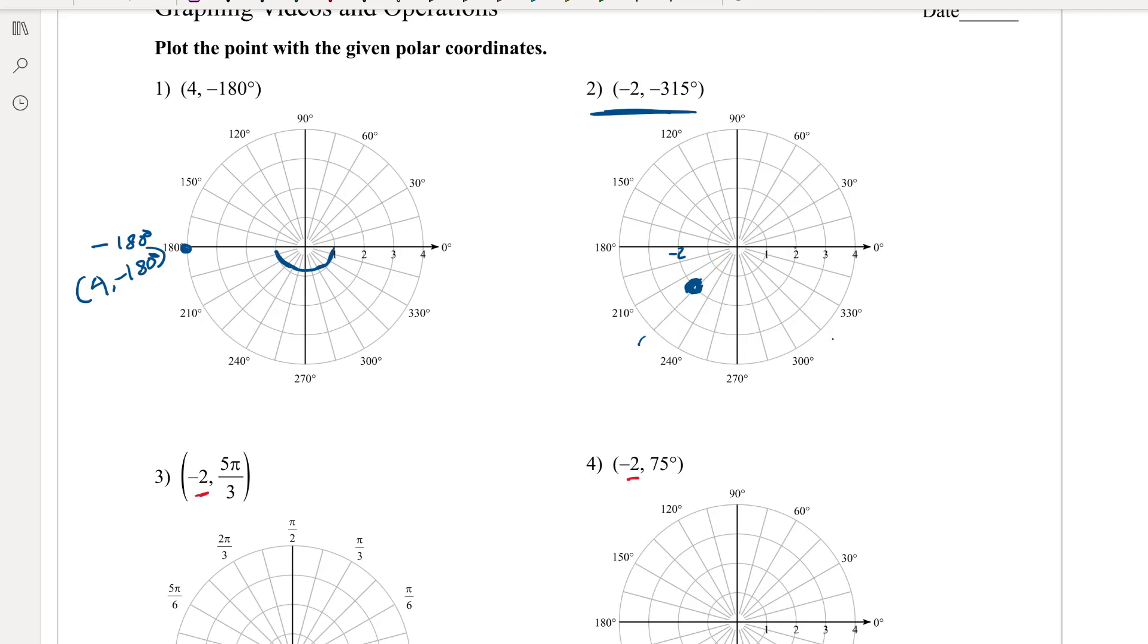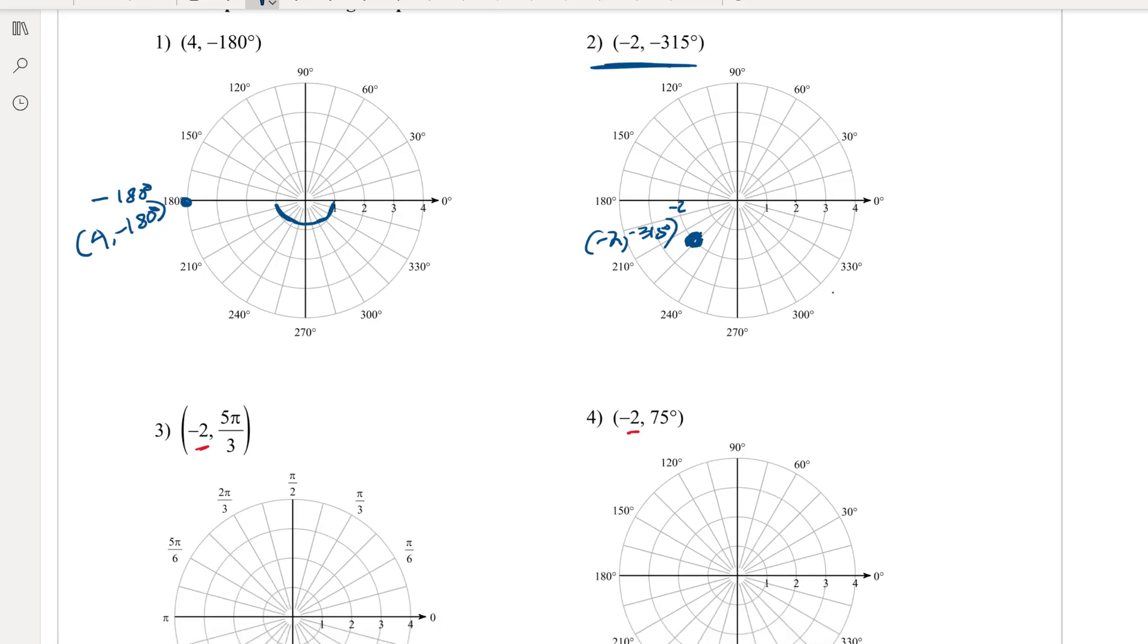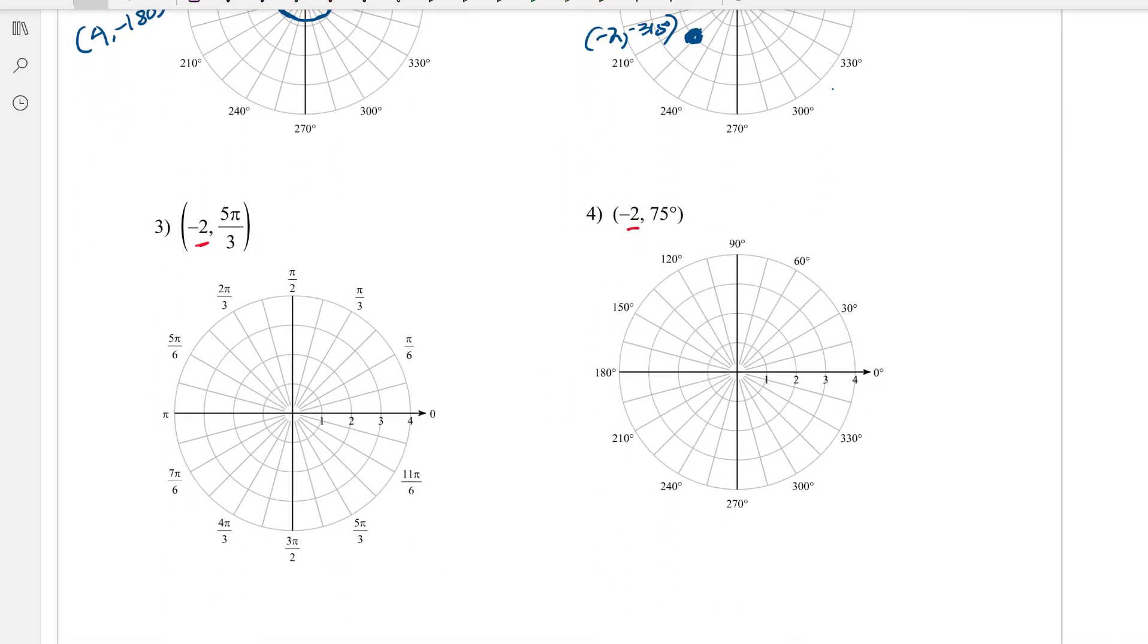So the point (-2, -315°) is right there. Now you've got a negative radius but a positive angle. 5π/3 is right here, and specifically the point (2, 5π/3) is right there.